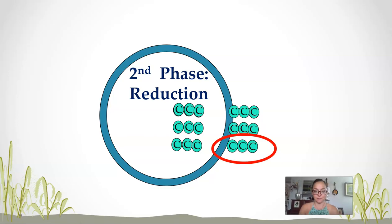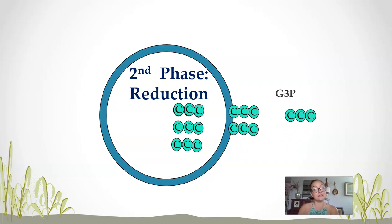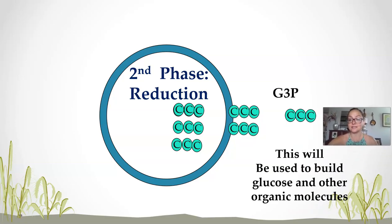We have one of these extra three-carbon molecules. Remember, we started with 15 carbons and then took in three more during carbon fixation. So these three extra carbons are going to leave the Calvin cycle at this point — they are the main building blocks of organic molecules.